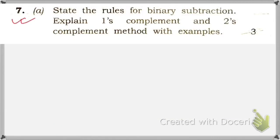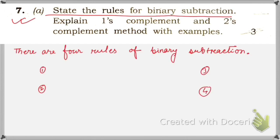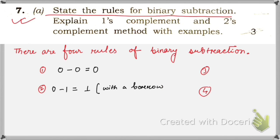Question seven: state the rules for binary subtraction. There are four rules: 0−0=0; 0−1=1 with a borrow of 1 (we need to take a borrow to subtract 1 from 0); 1−0=1; and 1−1=0. These are the four rules of binary subtraction.